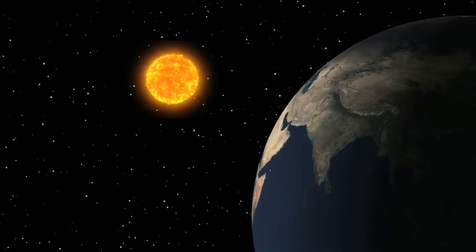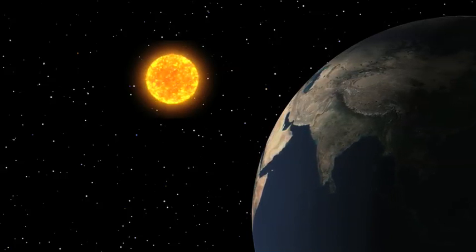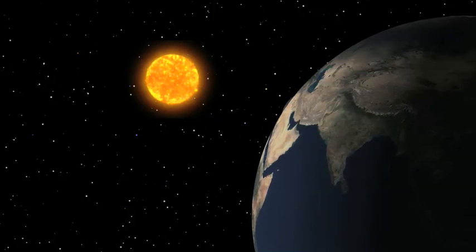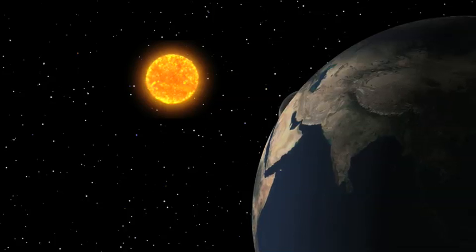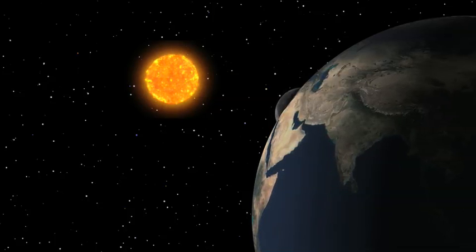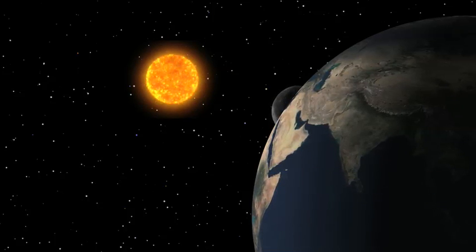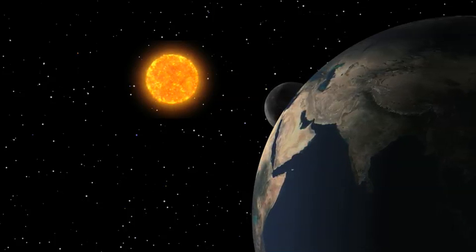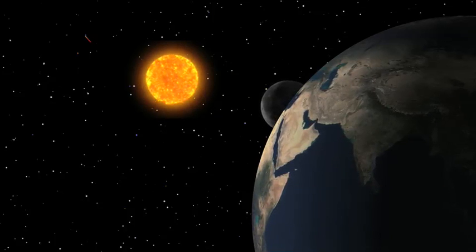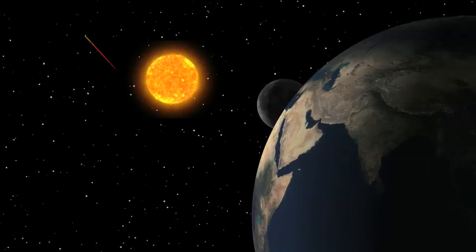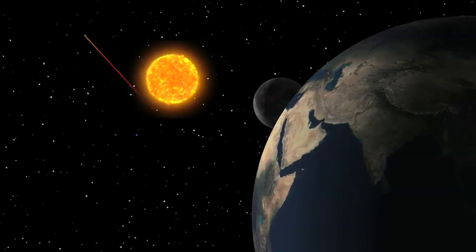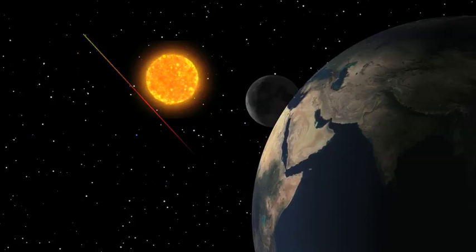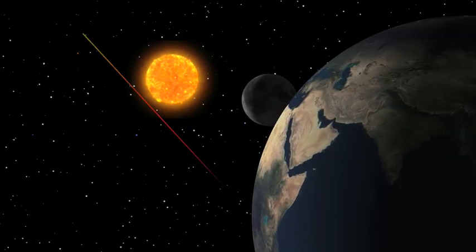If Einstein was right, and massive objects really do curve space itself, then gravity should affect the motion of everything through that space, even light. Imagine the light from a distant star traveling past the sun. According to Isaac Newton, gravity is an attraction between all objects with mass. And since light has no mass, the star's light would be unaffected by the sun's gravity.